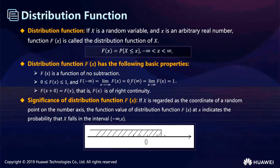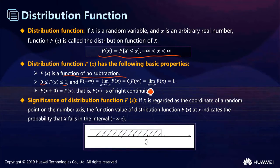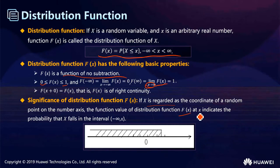Let's see some more details about the distribution function. The distribution function is defined as follows, and it is a non-decreasing function whose range goes from 0 to 1. When the point is very large, the distribution function approaches 1. If x is regarded as the coordinate of a random point on the number line, the distribution function value F(x) gives the probability that X falls in the interval from negative infinity to x.